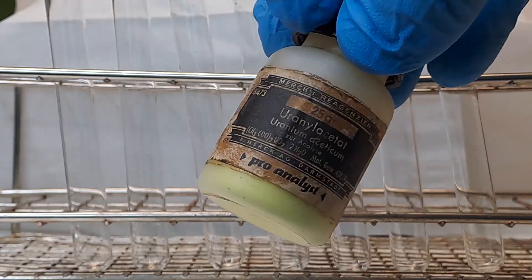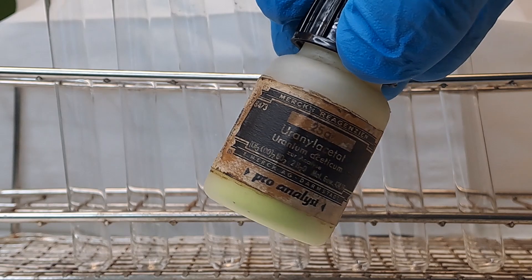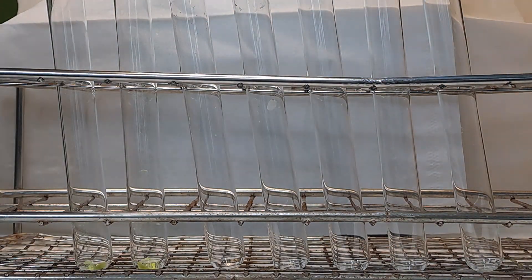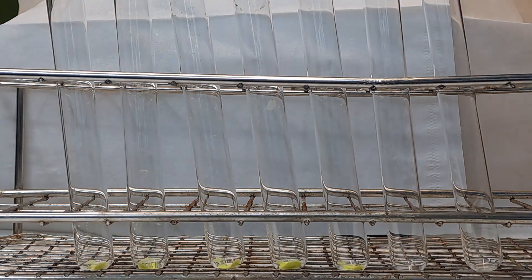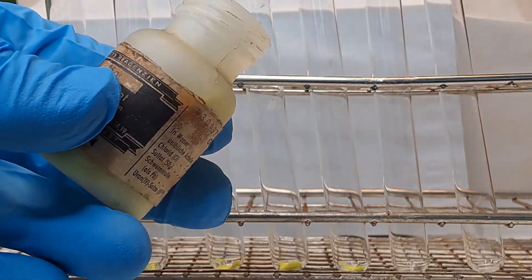Hello! Today we are taking a look at simple uranium chemistry in water. For this, a spatula tip of uranyl acetate was dissolved in distilled water. The uranyl acetate is somewhat old, as you can see from the container, and we simply have more of it than uranyl nitrate.